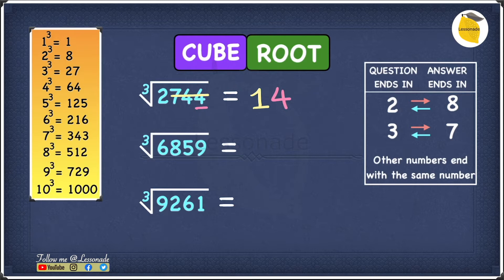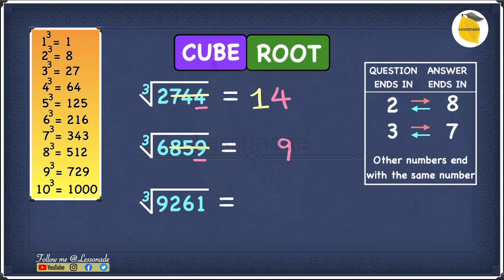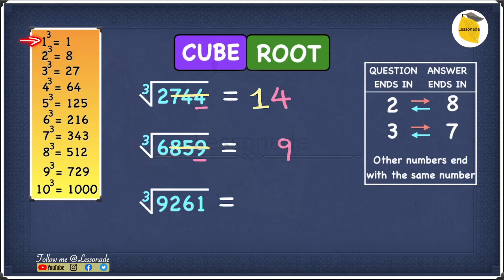Don't worry if you don't understand this yet — by the time we go through the next examples, you will get it. So let's have a look at the next one: cube root of 6859. The last digit is 9, and 9 goes in the category where other numbers end with the same number, so our answer will also end in 9. Cross out the last three digits — 8, 5, 9 — and we're left with 6. The 6 fits between 1 cubed and 2 cubed, and since 1 cubed is smaller, our answer starts with 1. So our answer is 19.